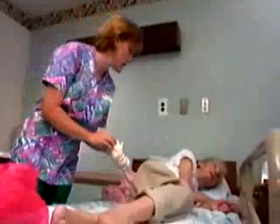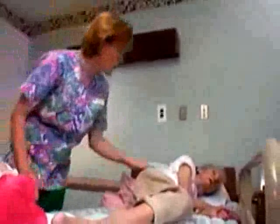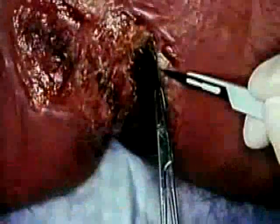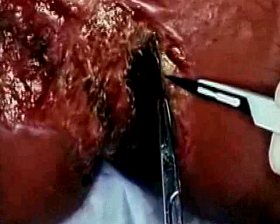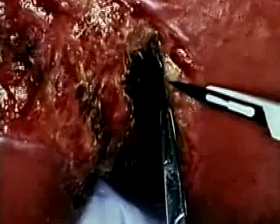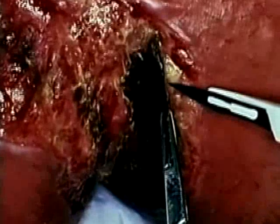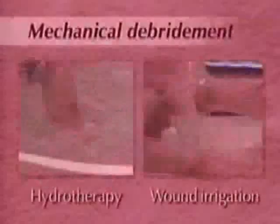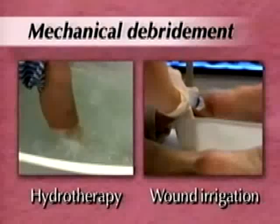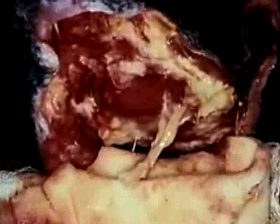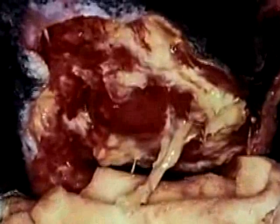Next, debride any necrotic tissue using the method most appropriate for the patient's condition, goals, and setting. Sharp debridement involves the use of a scalpel, scissors, or another sharp instrument and forceps. It should only be performed by a credentialed professional, and can be used to manage wounds with advancing cellulitis or sepsis, or to access the wound base rapidly. When sharp debridement is not indicated, use mechanical, enzymatic, or autolytic debridement. Mechanical debridement may be achieved through hydrotherapy or wound irrigation to soften and remove eschar and debris. It can also be done with a wet-to-dry dressing, which adheres to necrotic tissue so it can be pulled off; however, this non-selective procedure can cause pain and can harm granulation tissue.